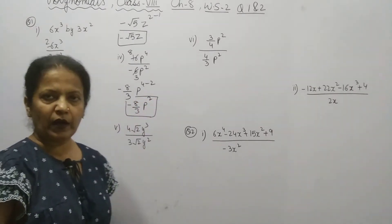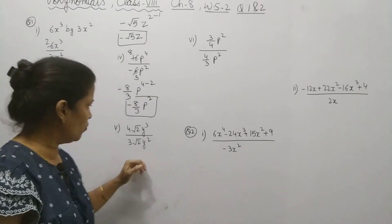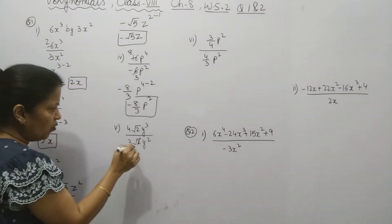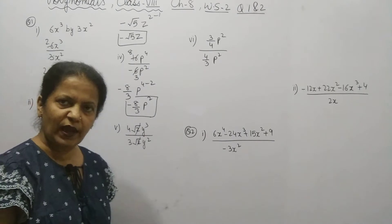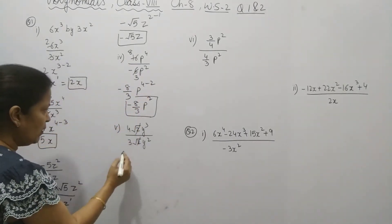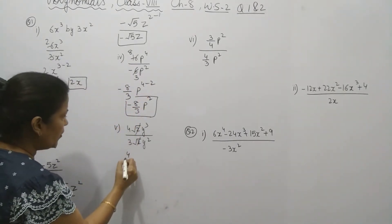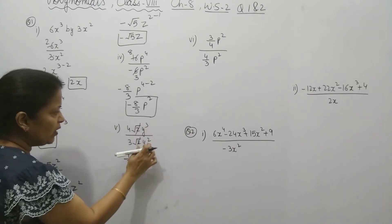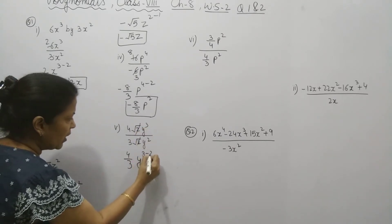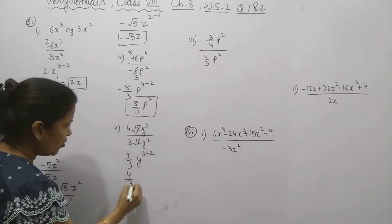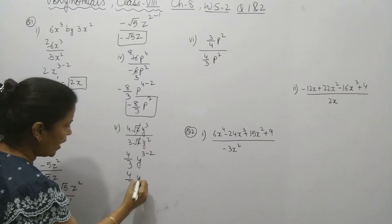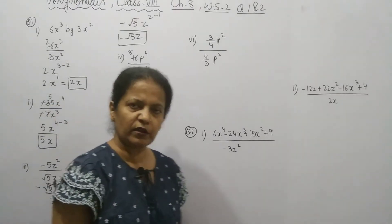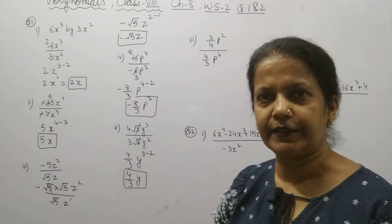What about the fifth part? Look — this is root 2 and this is root 2, so we can cancel them. It will become 4 upon 3 · Y power (3 minus 2). So 3 minus 2 is 1, giving 4/3 · Y. Power 1 — no need to write it.